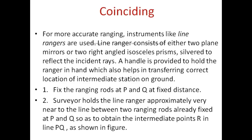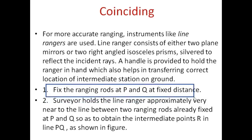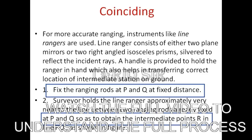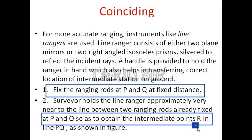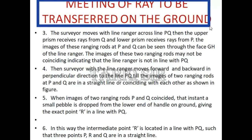In summary, we fix the rods at P and Q, and between P and Q we have an intermediate point R. This point R is maintained right in the center, or as required. Then finally we coincide these two rays — the meeting of the rays is transferred to the ground — and this is how the ranging is completed.